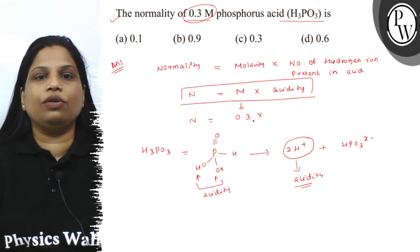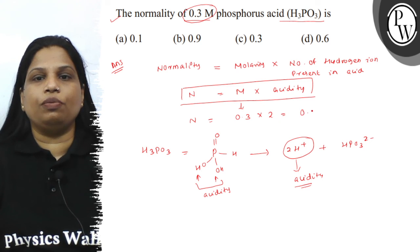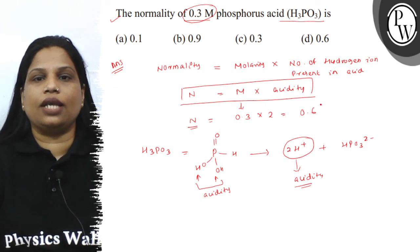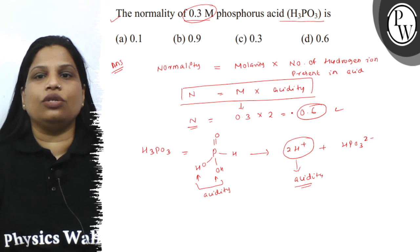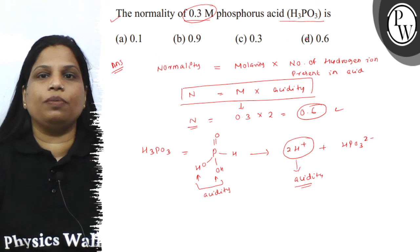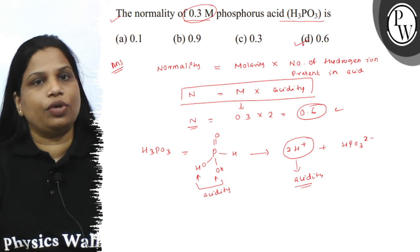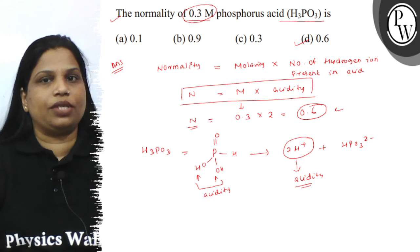If we multiply 0.3 into 2, the value is 0.6. So the normality of this acid is 0.6. Your option number D is correct. I hope you understood well. Best of luck.